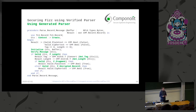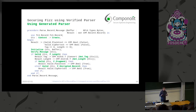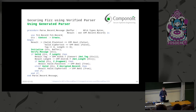First we declare a context, which stores the internal state of the parser for this particular message. Next we initialize the result with default values, and then initialize the context, adding a pointer to it so it can be used during parsing. The actual parsing is done by calling verify_message, which checks field by field that all conditions specified in our specification are fulfilled. The result is stored in the context, and we use different functions to access that information.